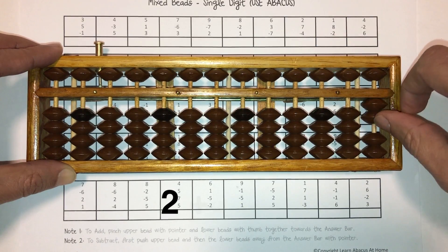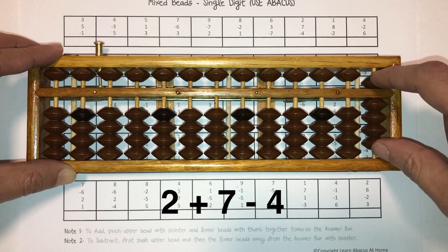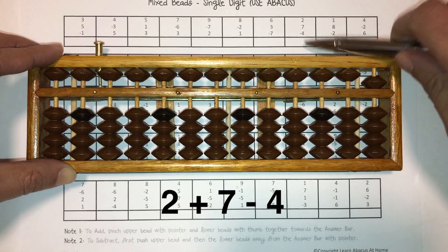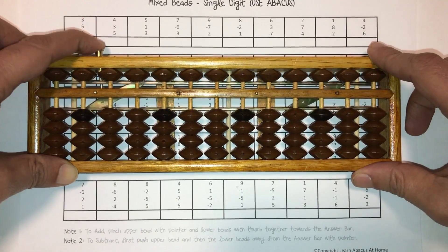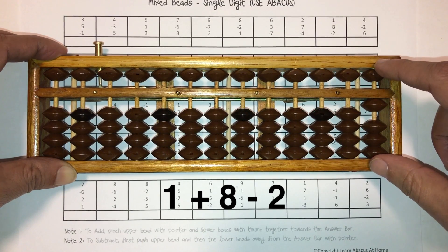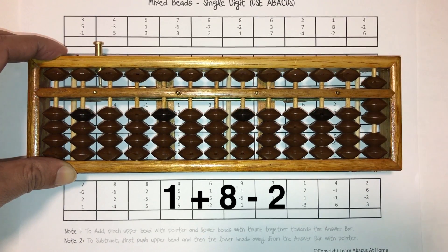With that, let's get started. Two plus seven minus four, answer is five. Five goes there. One plus eight minus two, answer is seven. Five, six, seven. Seven goes right there. Four minus two plus six is eight. Eight goes there.